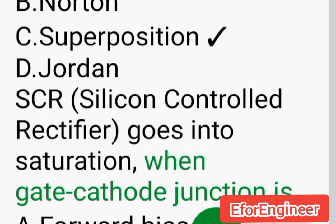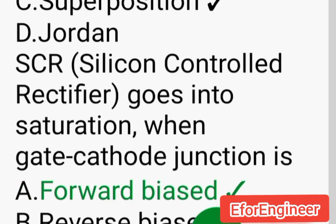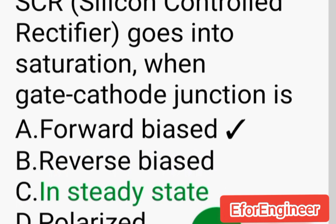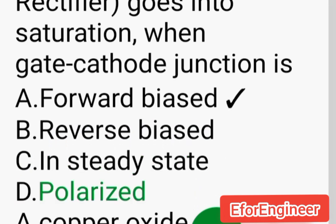SCR (Silicon Controlled Rectifier) goes into saturation when gate-cathode junction is: A. Forward biased, B. Reverse biased, C. In steady state, D. Polarized.